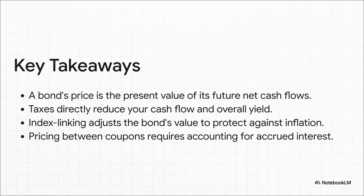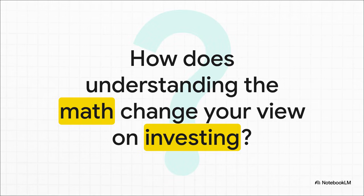So what's the big takeaway? Pricing a bond isn't some dark art — it's a logical process of accounting for four key ideas. One: money today is worth more than money tomorrow. Two: taxes will always take a slice. Three: inflation is always trying to eat your returns. Four: interest is earned every single day, not just on payday. This was never just a math exercise. Truly understanding how an asset is valued is one of the most powerful tools you can have as an investor. It lets you cut through market noise and ask the right questions. The next time you see a bond's price flicker up or down, instead of just seeing a number, you can ask: is that because of interest rates? Is it inflation? Or something else entirely? Now you know how to find out.